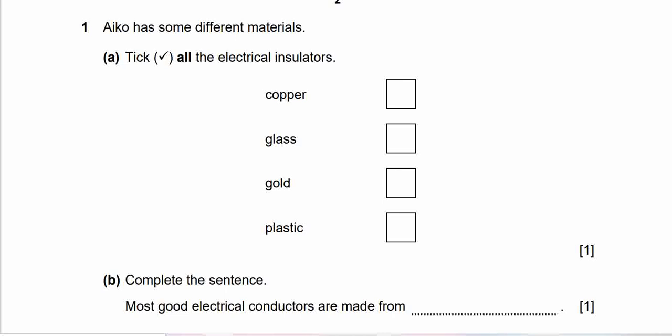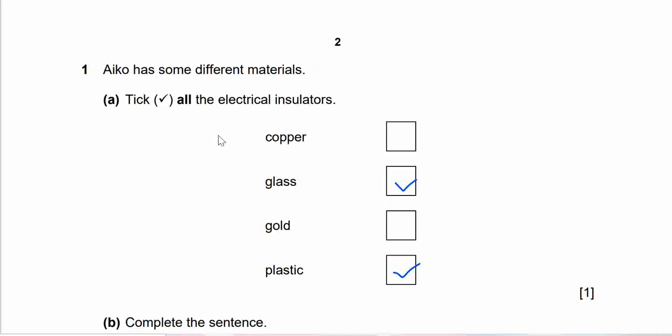Here we go, this is question 1. Aiko has some different materials. Check all the electrical insulator. Is it copper, glass, gold or plastic? You may pause for a few seconds and get your own answer. Here's the answer and the explanation. The electrical insulator is glass and plastic. Metal, like copper and gold, they are good electrical conductor. While insulator prevents material from conducting electricity.